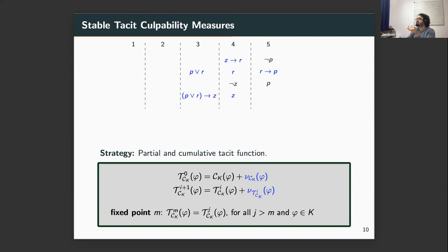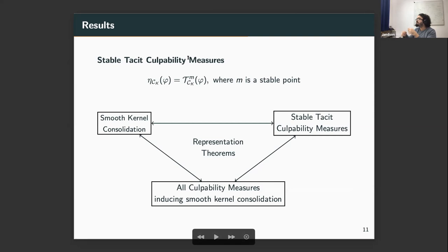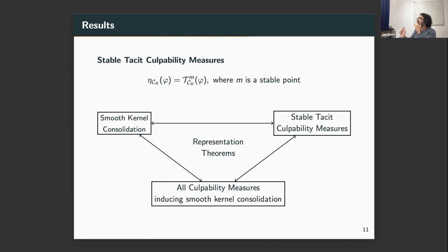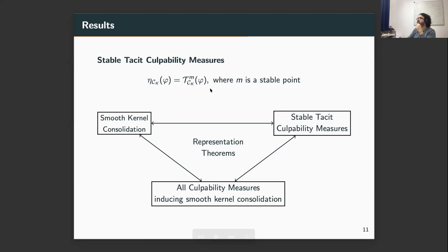This class of culpability measures, based on this fixed-point approach, we call stable tacit culpability measures. We show that stable tacit culpability measures are strong enough to yield smooth choices, and therefore smooth kernel consolidation functions. Moreover, any smooth kernel consolidation function can be realized by a stable tacit culpability measure — giving us a representation theorem. We then prove something even stronger: if you construct a smooth kernel consolidation function via a culpability measure, that measure is necessarily a stable tacit culpability measure. These are the best you can do using culpability measures — there is no way to avoid them.